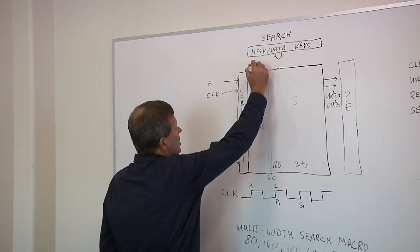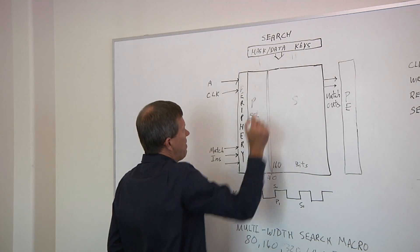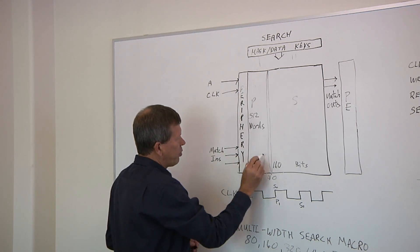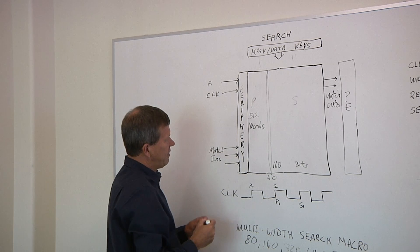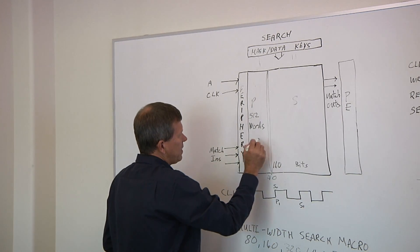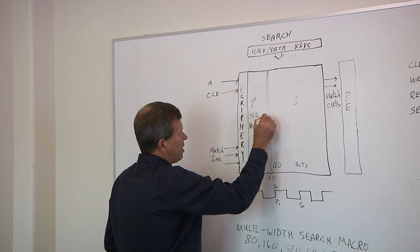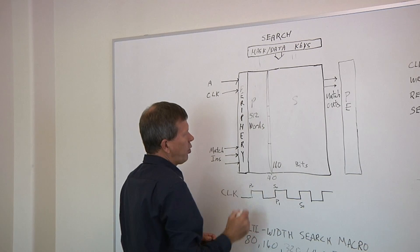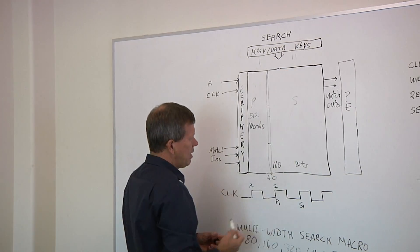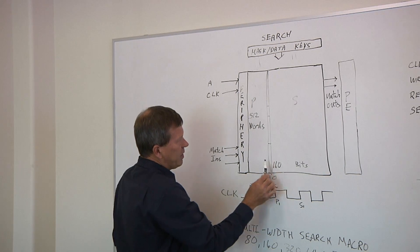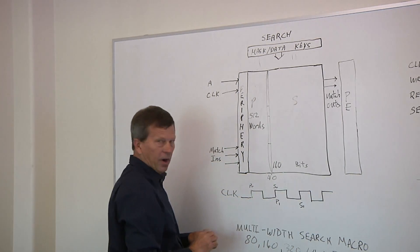What's going to happen is the search key is going to be present from the top. And on the first clock cycle, it's going to search only the primary portion of this TCAM array. Now, if the primary portion matches any one of these matchouts, these matchouts are fed into the secondary portion of this TCAM key coming in.